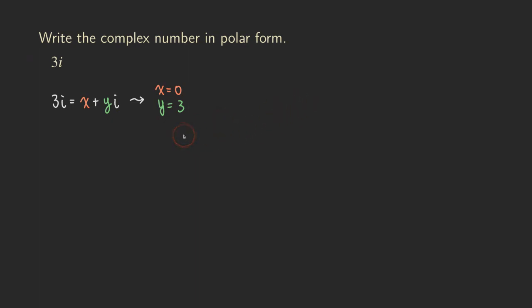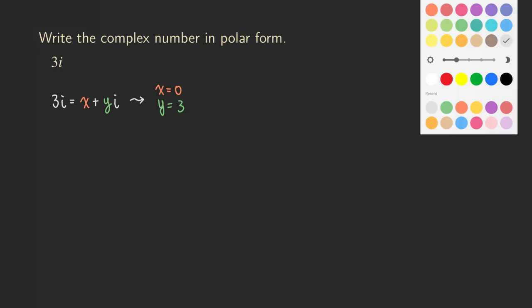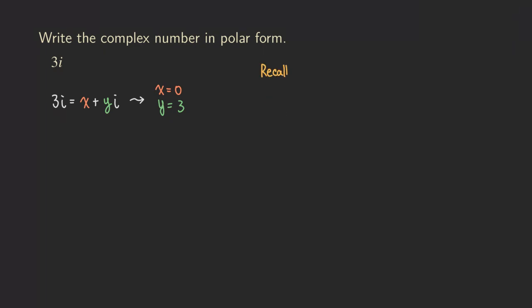So to convert it in the polar form, we actually need two things. We need the r and also we need the angle. So let's just recall. To figure out the r, there is a formula that will allow us to do it, which is basically just the Pythagorean theorem. And that is going to be r equals the square root of x squared plus y squared. And then the other one, to figure out the angle, there is another formula for that, which is tangent theta equals y over x.